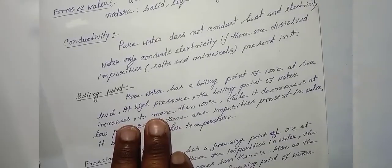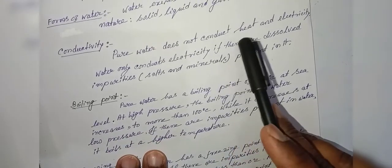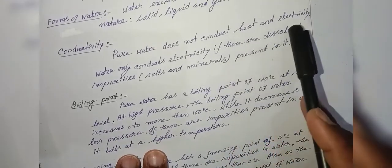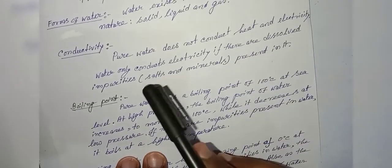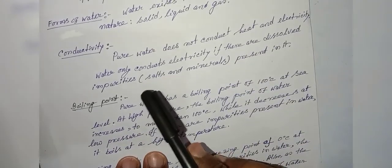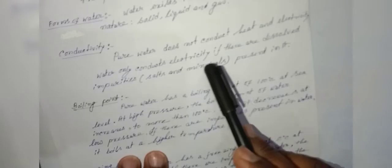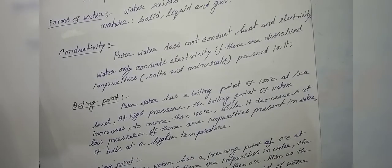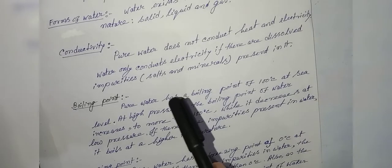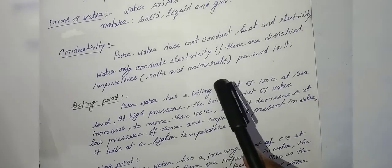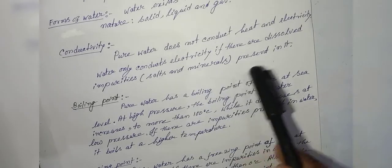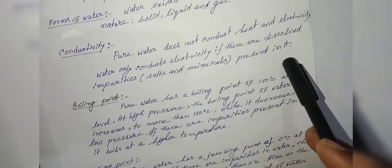Conductivity: Pure water does not conduct heat and electricity. Water only conducts electricity if there are dissolved impurities, that is, salt and minerals present in it.